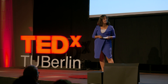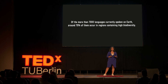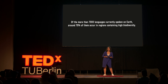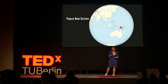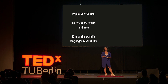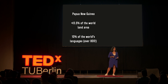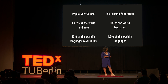Of the more than 7,000 languages spoken on Earth, almost 70% of them occur in regions containing high biodiversity. For instance, Papua New Guinea, which is known for its richness in biological diversity, accounts for only 0.5% of the world's land area, but is home to over 10% of the world's languages — that's over 800 languages in only one country. In contrast, the Russian Federation accounts for 11% of the world's land area, but is home to only 1.5% of the world's languages.